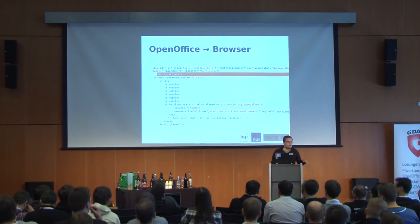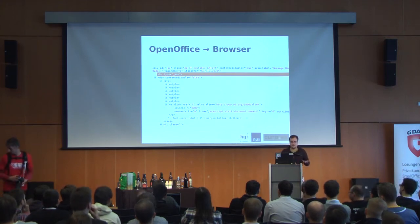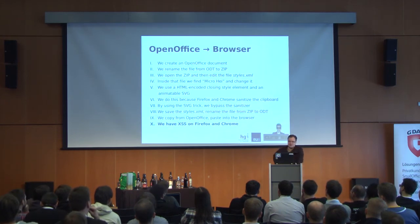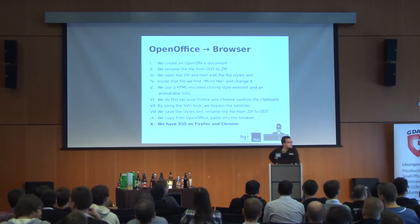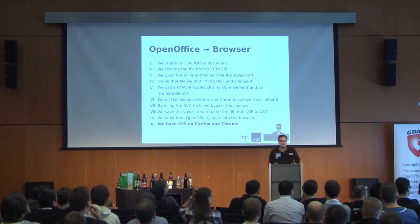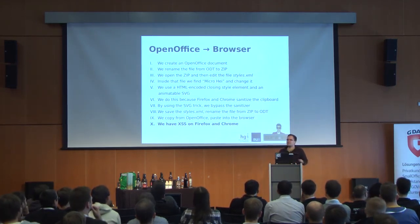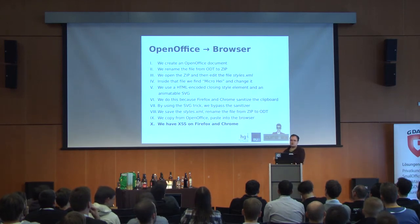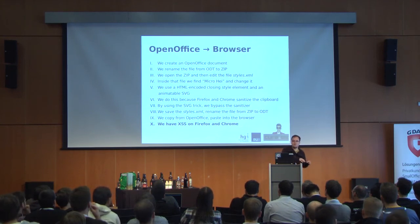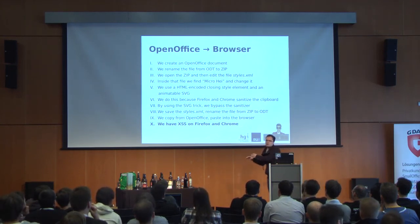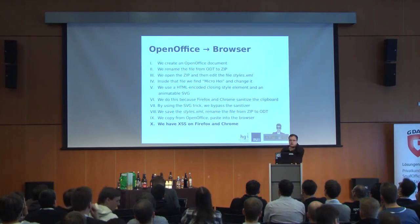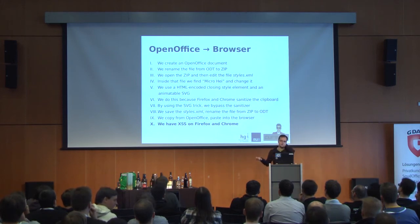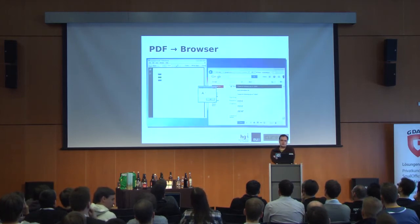Step by step: create an Office document, rename it from .odt to .zip, open styles.xml, find the string 'WenQuanYi Micro Hei' — it's in there but invisible to us in the Western European hemisphere because we'd only see it with the Chinese locale. Change this string, HTML-encode the bypass, put it back into the file, save it, reopen in OpenOffice, copy, paste — and you have an attack on Firefox and Chrome. OpenOffice, Firefox, and Chrome — we can do better.